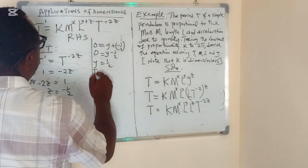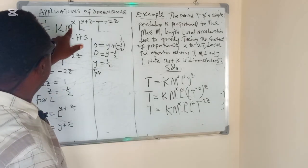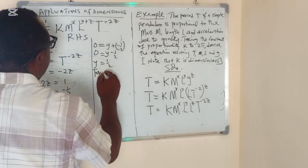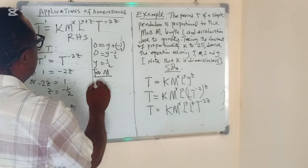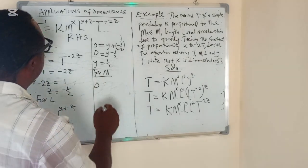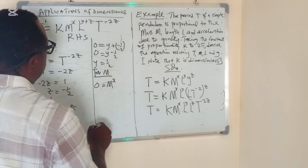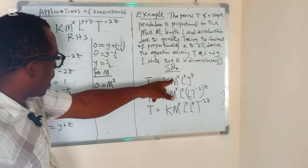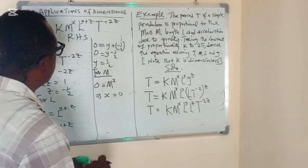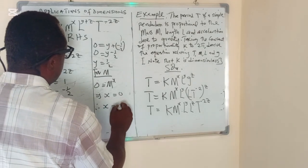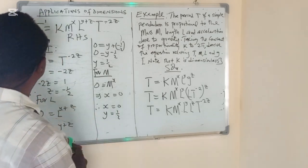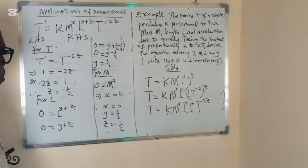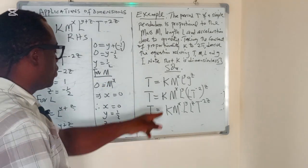For M: on the right-hand side we have M^X, and on the left-hand side there is no M, so 0 = X, meaning X = 0. We have now determined all three unknown parameters: X = 0, Y = 1/2, and Z = −1/2. We will now substitute these back into the formula.